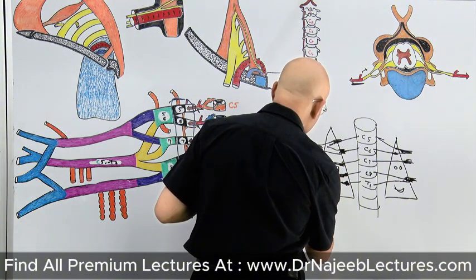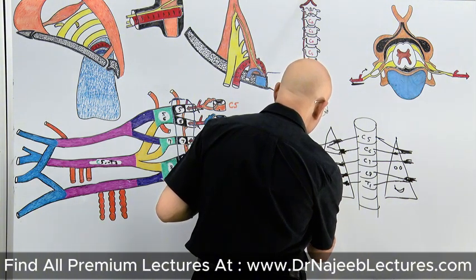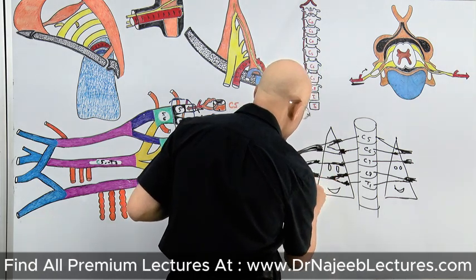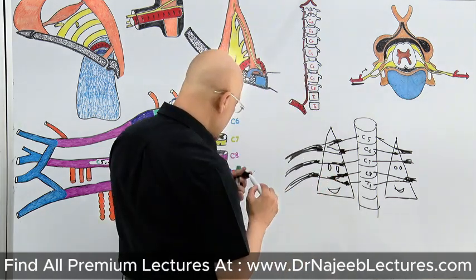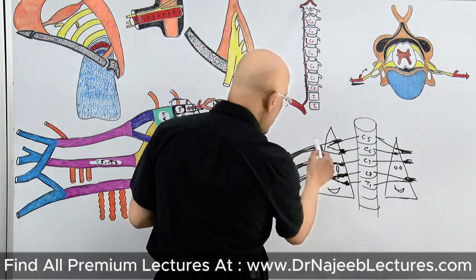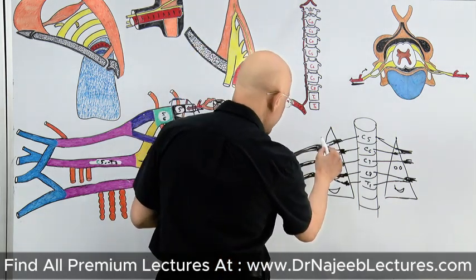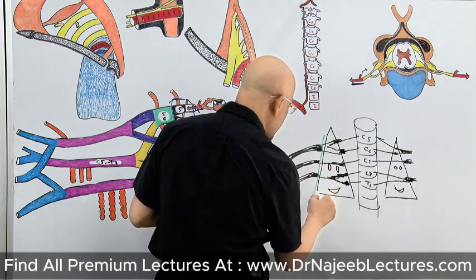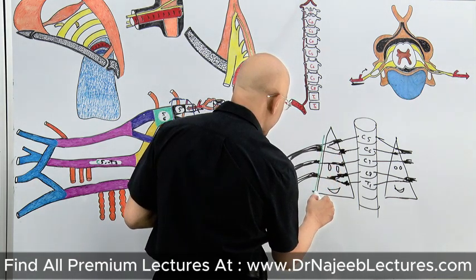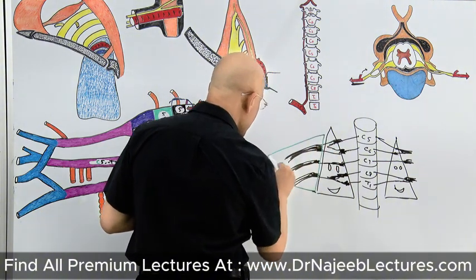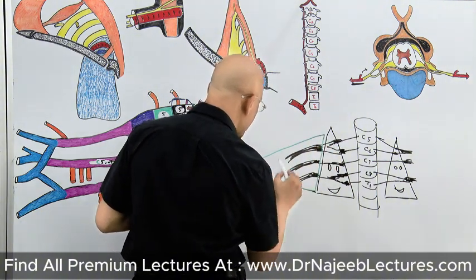So in this way, we have the upper trunk, middle trunk, and lower trunk. On the lateral side there is another triangle, called the subclavian triangle.